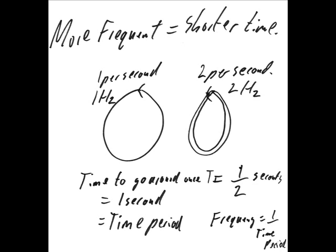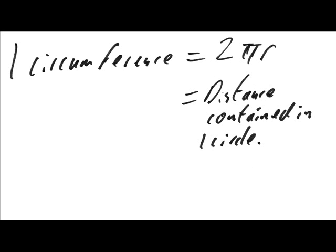In linear motion, speed was distance divided by time. In a circle, distance is 2πr, the circumference of a circle, where r is the radius. The time taken for an object to go around the circle is the time period.